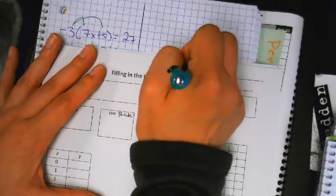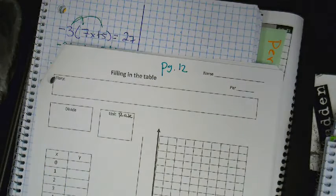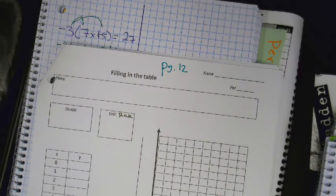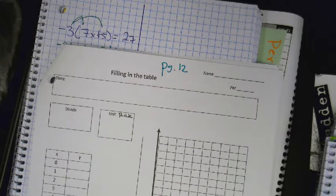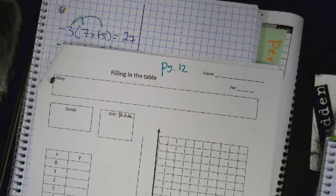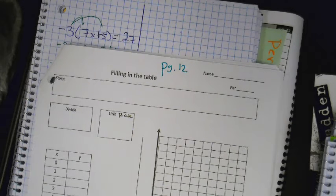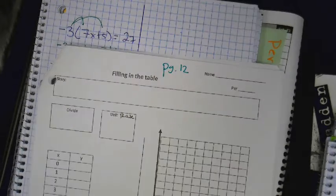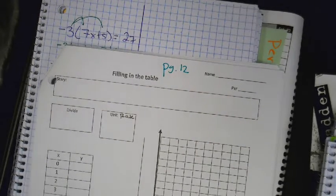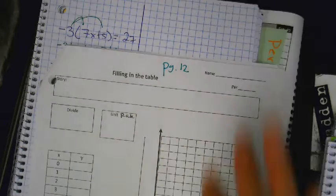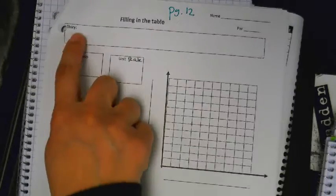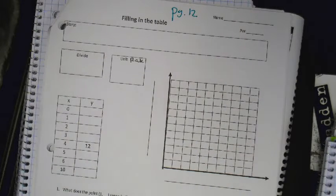Alright, page 12. Page 12. I might give it to you for homework, I don't know, we'll see. Okay, page 12. Alright, oh no! Oh no, it's terrible. Look, the story, there's an empty box. Oh no, what am I supposed to do? We have to make it our own.